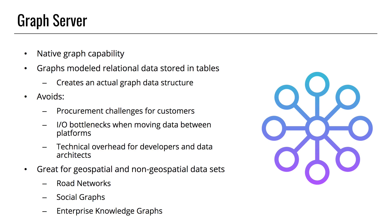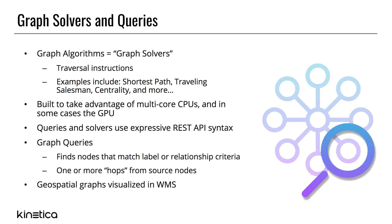We offer a wide range of algorithms, or graph solvers, that traverse graphs and derive insights. For example, you can find the shortest path between two nodes, or find the optimal round-trip path through many nodes. These algorithms are highly efficient and can take advantage of multi-core CPUs, and in some cases the GPU as well.